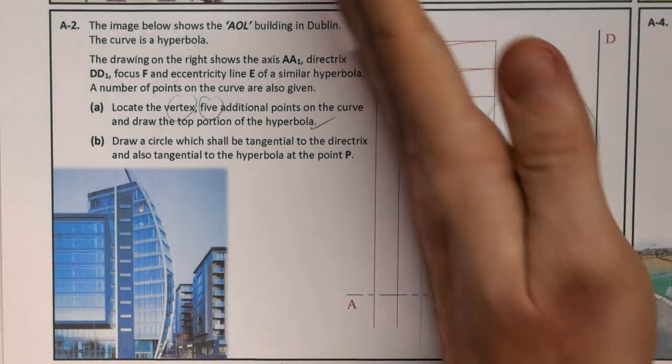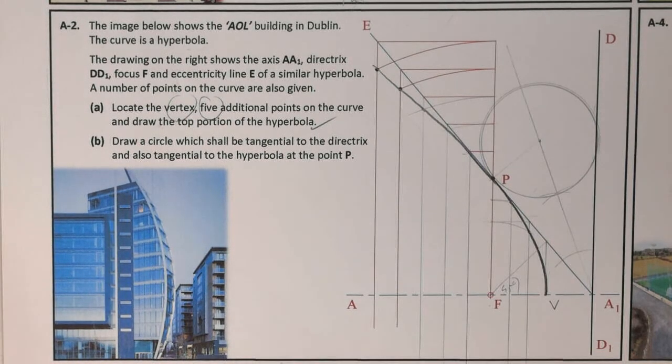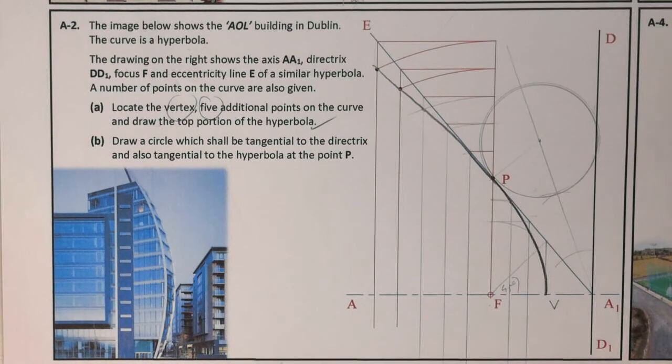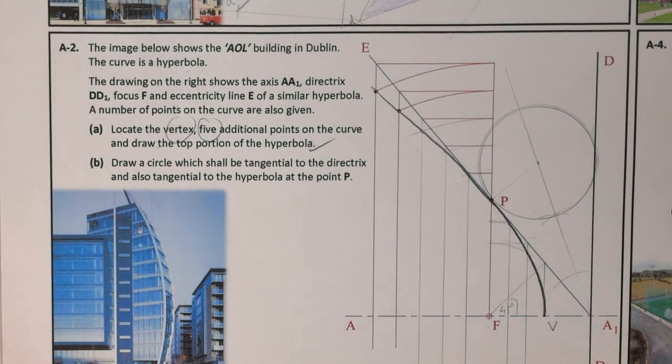I swing an arc, it is touching off of the directrix at one point and at my point P at one point, so it's tangential to both of those points. That was my conics question on 2019 section A.